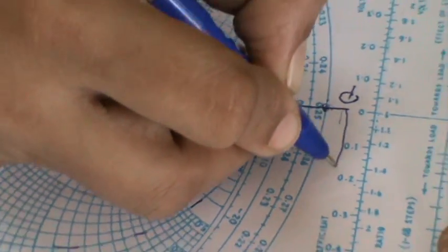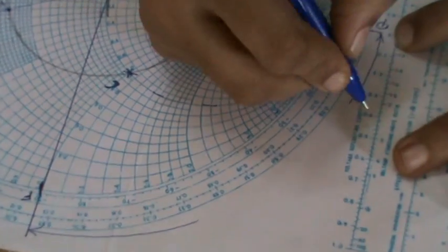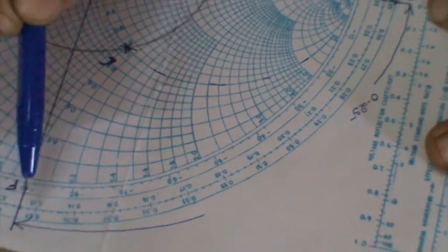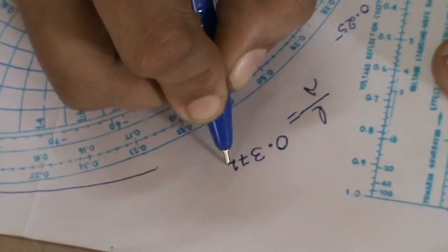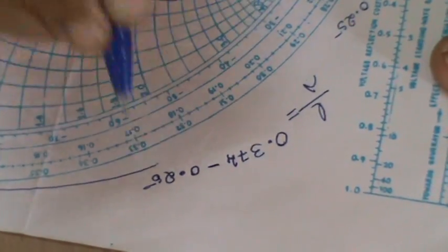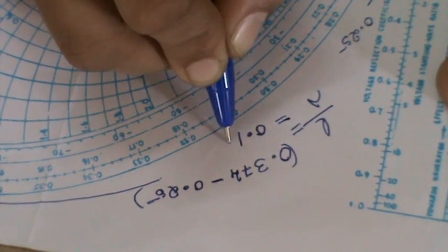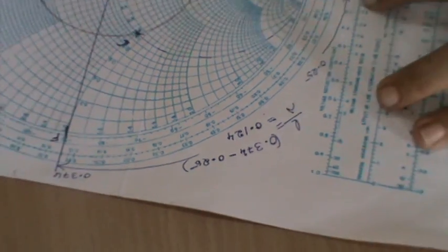The length of the stub is given by the distance between the point P and the point F. This is already 0.25. You can move towards generator in a clockwise direction and here the value is around 0.374. So l by lambda is given by 0.374 minus 0.25, that is 0.124.